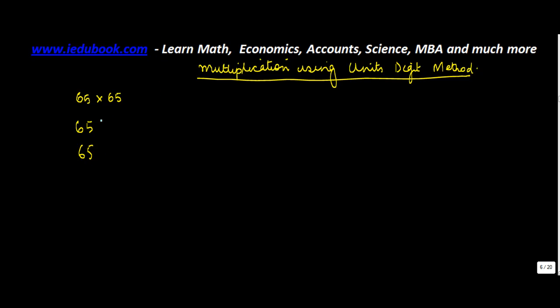In the Units Digit method, the first thing you need to check is whether the tens place is the same. If this would have been 65 and 54, then the Units Digit method would not apply.